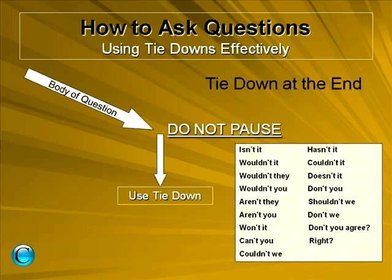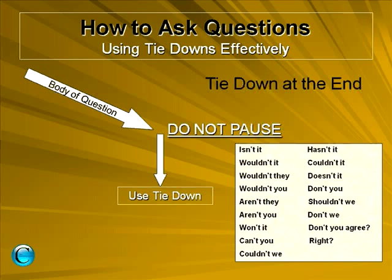Here are some tie-downs so you know what they are — examples that should cover just about anything you could ever come up with: Isn't it? Wouldn't it? Wouldn't they? Wouldn't you? Aren't they? Aren't you? Won't it? Can't you? Couldn't we? Hasn't it? Couldn't it? Doesn't it? Don't you? Shouldn't we? Don't we? Don't you agree? Right?